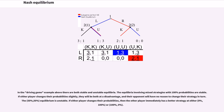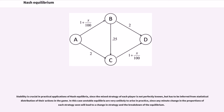In the driving game example above there are both stable and unstable equilibria. The equilibria involving mixed strategies with 100% probabilities are stable. If either player changes their probabilities slightly, they will be at a disadvantage, and their opponent will have no reason to change their strategy in turn. The unstable equilibrium is such that if either player changes their probabilities, then the other player immediately has a better strategy. Stability is crucial in practical applications of Nash equilibria, since the mixed strategy of each player is not perfectly known, but has to be inferred from statistical distribution of their actions in the game. In this case unstable equilibria are very unlikely to arise in practice, since any minute change in the proportions of each strategy seen will lead to a change in strategy and the breakdown of the equilibrium.